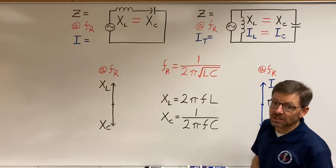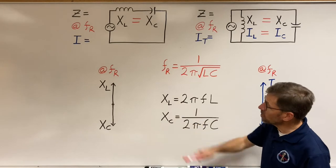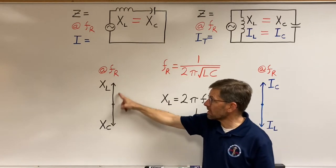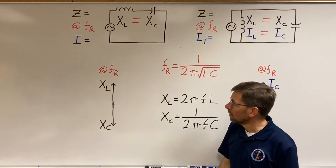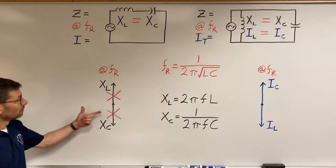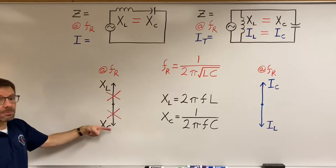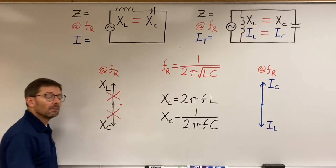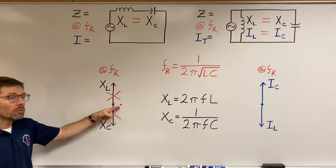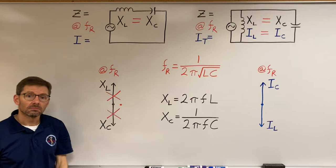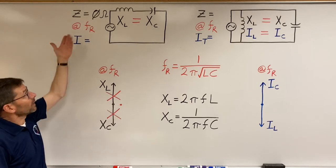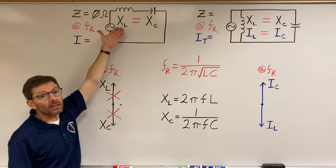So what happens at resonant frequency? If XL equals XC, the vectors are going to be the same length in series. XL points up, XC points down. If they're the same length, they cancel each other out — five steps forward, five steps backwards, I went nowhere. I'm left with a dot. Since these are ohms, that means I have no ohms at the circuit source. That's correct — it would look like a short circuit, no ohms.